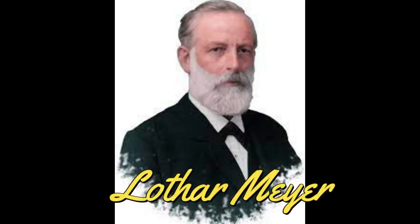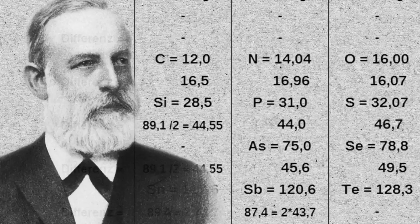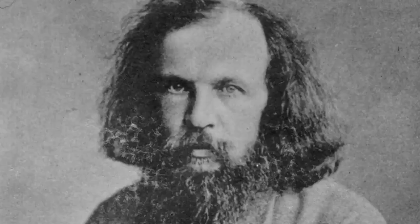Julius Lothar Meyer, 19 August 1830 – 11 April 1895, was a German chemist. He was one of the pioneers in developing the earliest versions of the periodic table of the chemical elements. Russian chemist Dmitry Mendeleev, his chief rival, and he had both worked with Robert Bunsen.